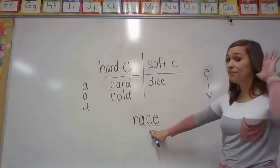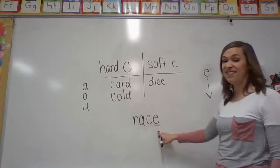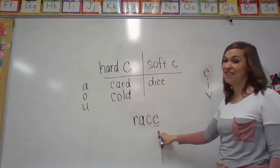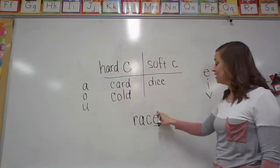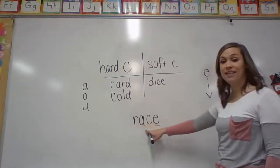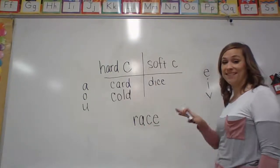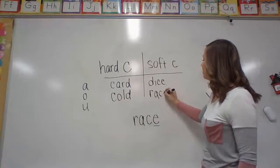So this is going to be a soft C. Soft C says what? Very good. It says S. So again, this is another magic E. A lot of times this happens with the soft C's where it's got the magic E at the end. So it's going to give the A the power to say its name. So now this word is race. Very good. Under soft C.